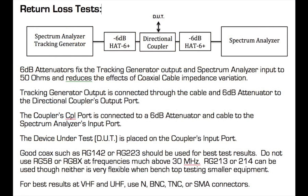For a return loss test, we use this block diagram. The spectrum analyzer tracking generator goes through a cable to a 6 dB attenuator, and that goes into the output port of a directional coupler. The other 6 dB attenuator goes to the input of the spectrum analyzer from the coupled port of the directional coupler, and the device under test goes to the input port of the directional coupler. This gives us the return loss. The 6 dB attenuators also help fix the tracking generator output and spectrum analyzer input to 50 ohms and reduce the effect of coaxial cable impedance variations.